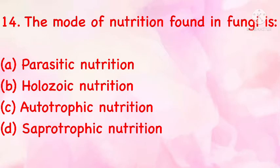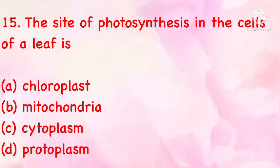The mode of nutrition found in fungi is: (a) parasitic nutrition, (b) holozoic nutrition, (c) autotrophic nutrition, (d) saprotrophic nutrition. The correct answer is (d): saprotrophic nutrition. The site of photosynthesis in the cells of a leaf is: (a) chloroplast, (b) mitochondria, (c) cytoplasm, (d) protoplasm. The correct answer is (a): chloroplast.